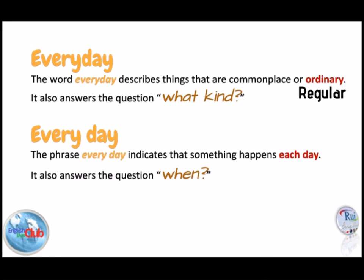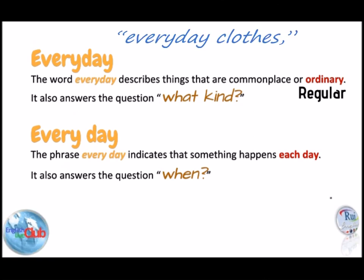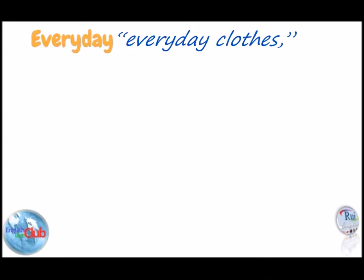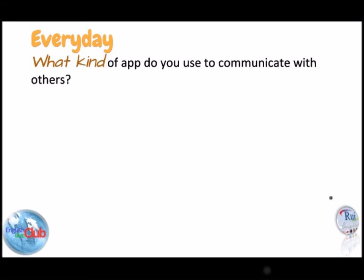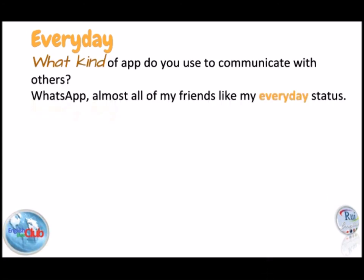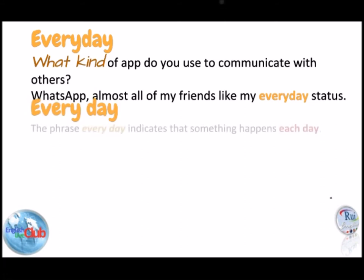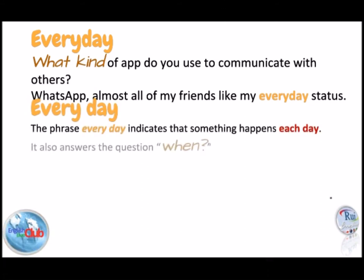'Everyday' is an adjective. In the example 'everyday clothes,' 'everyday' describes the clothes — a noun. The clothes are ordinary. Similarly, an everyday dinner is a common dinner, like pizza. A noun almost always follows the word 'everyday' in a sentence. The only exception is if the noun has other adjectives that describe it.